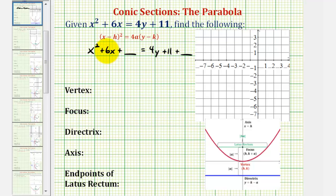Well, half of 6 is 3, 3 squared is equal to 9, so we're going to add 9 to both sides of the equation. Notice how now we can factor the left side. We'd have x and x, and the factors of positive 9 that add to 6 are positive 3 and positive 3. And on the right side, we'd have 4y plus 20.